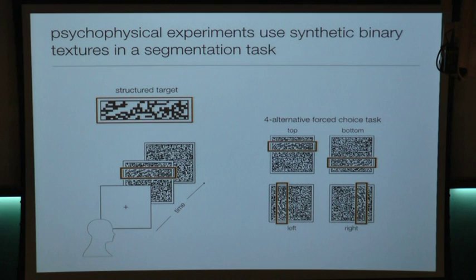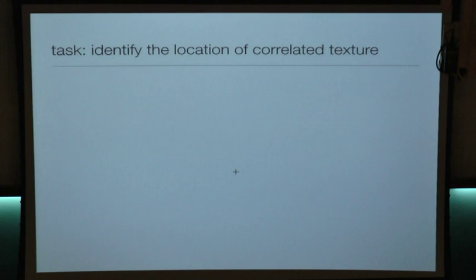I'll illustrate this task by having you do a quick example. You will see a fixation cross, followed by a brief presentation of a stimulus, followed by a white noise mask. There will be a correlated strip of texture on this stimulus — it will appear in either the top, bottom, left, or right — and I'll ask you to tell me which one.